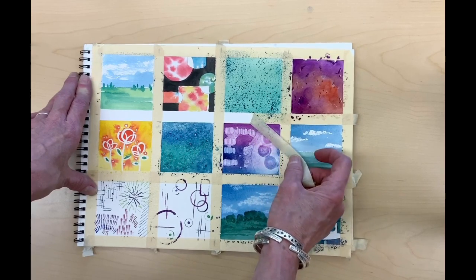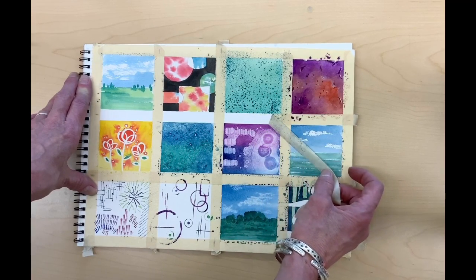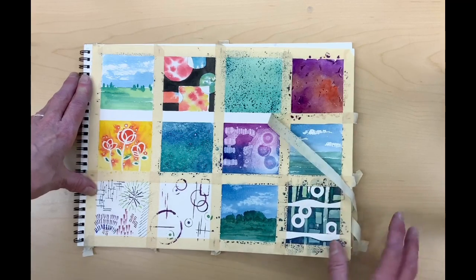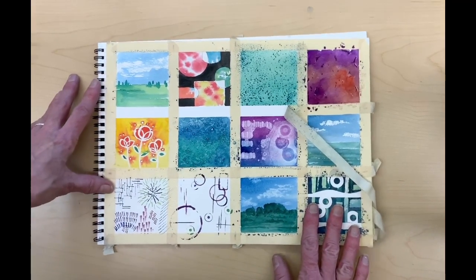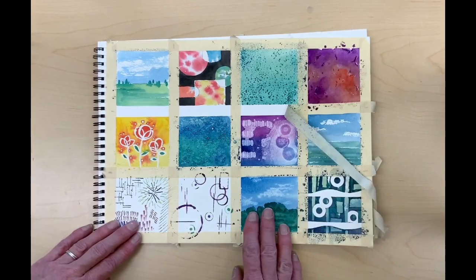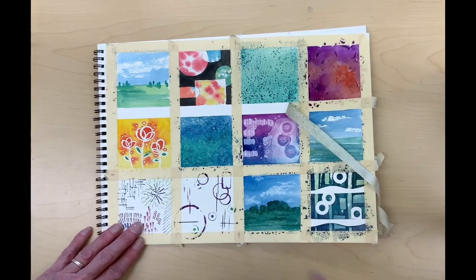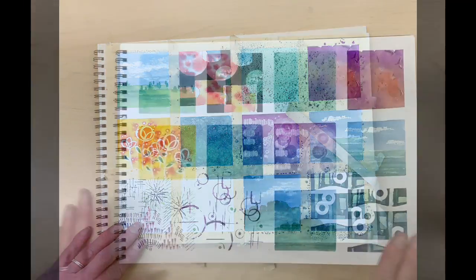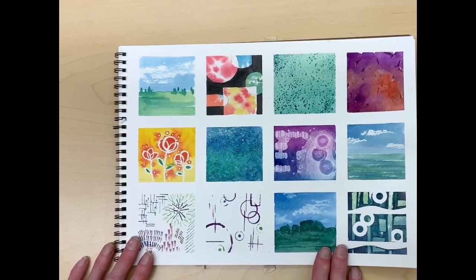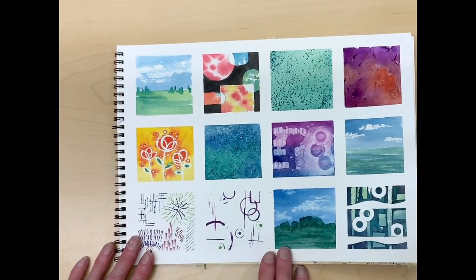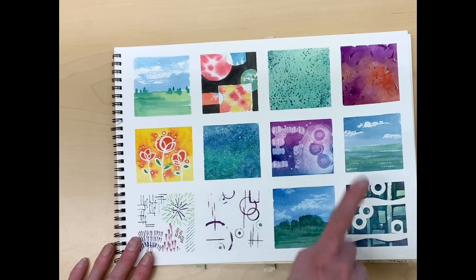If you're not happy with one of your techniques, you can always redo it on another piece of paper and then just cut it out and put it right over the top of whichever one you want to replace. Do that before you take your photograph. All right, so I've taken off all the tape. I think it looks great.